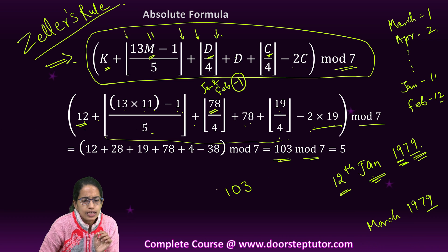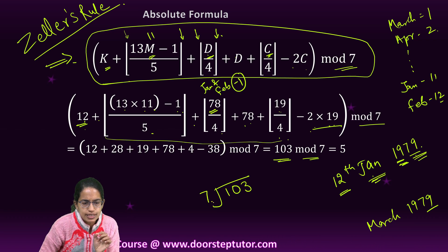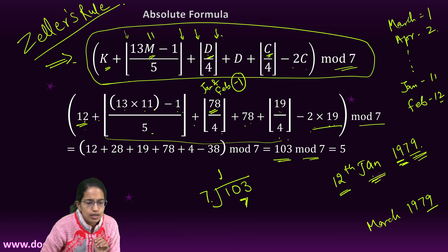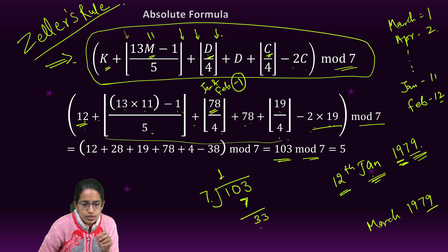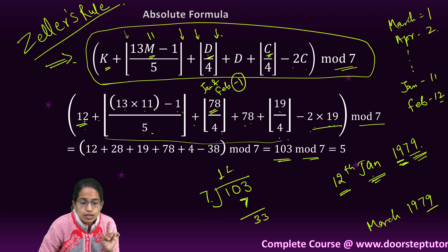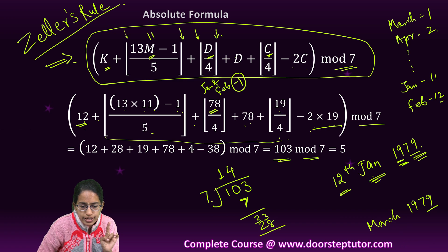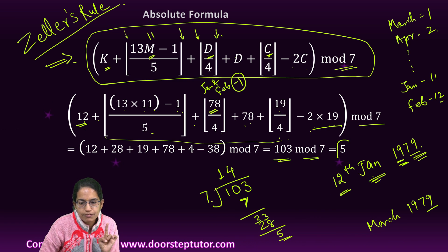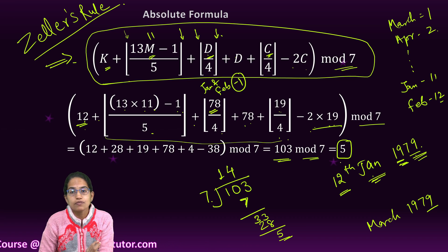Now I solve everything here. This gives me 103. 103 mod 7—what does it imply? 103 divided by 7. I divide it by 7: 1, 3, 33. Now 7 sevens, 7 threes are 21, 7 fours are 28. What is the remainder? 5.